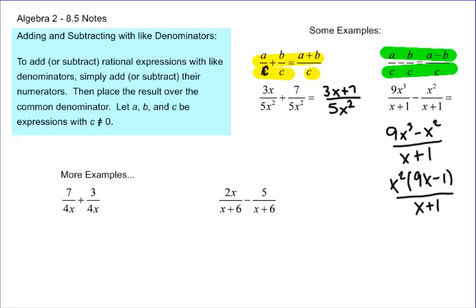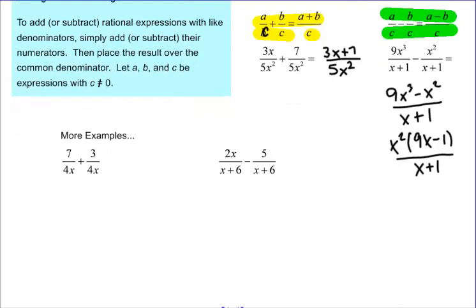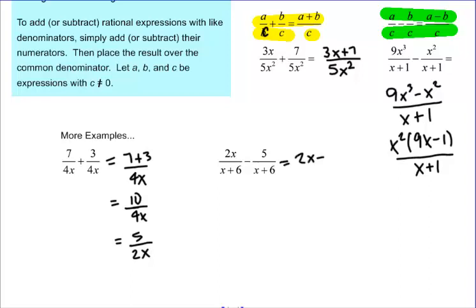Again, the denominators are the same — all you do is add the tops. Some more examples: if I have 7 over 4x plus 3 over 4x, that's going to be 7 plus 3 over 4x, which is 10 over 4x. And 10 over 4x reduces by 2 to 5 over 2x. And then the last one: 2x minus 5 over x plus 6 for both, which would be 2x minus 5 over x plus 6. We love common denominators — it makes life a lot easier to deal with, and there's nothing we have to do that's out of the ordinary.